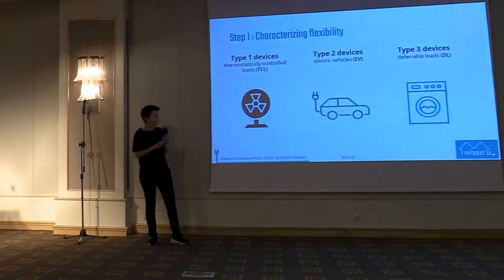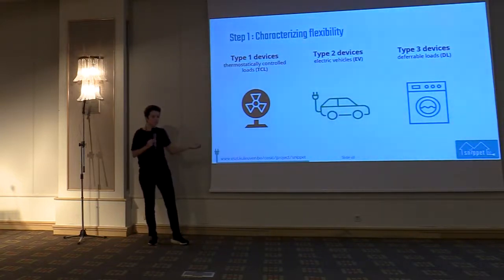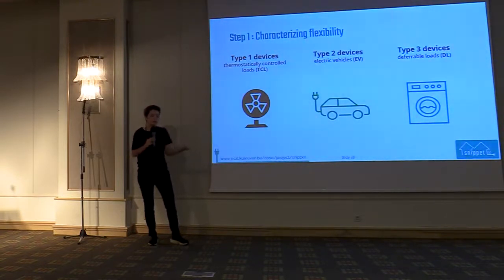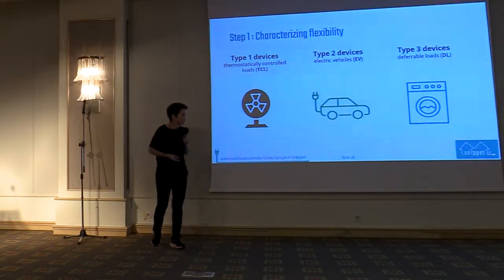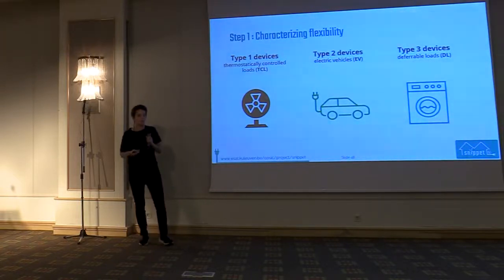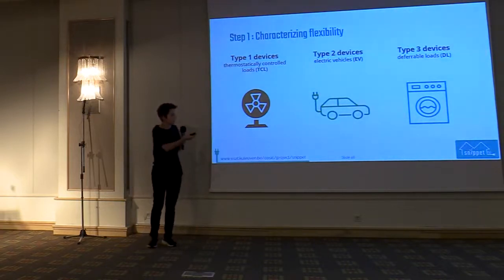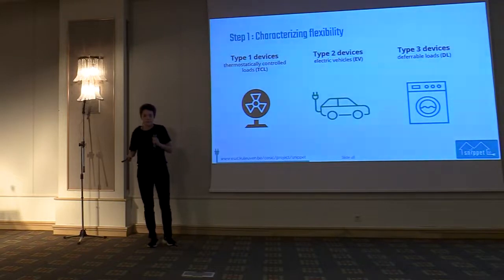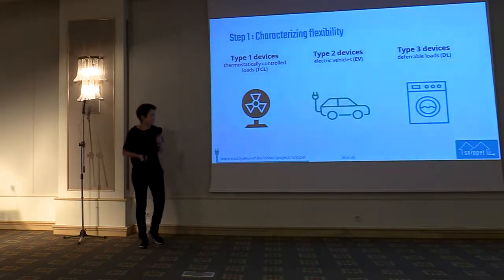As Tony mentioned, we consider three types of devices. First, thermostatically controlled loads like air conditioning — you do not have a hard deadline and can stop or run it according to your needs. Then electric vehicles — you need to finish charging by the time you need to leave the house. And washing machine types — which you cannot interrupt once you start the cycle, or at least it's probably not advisable.